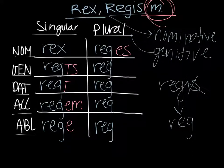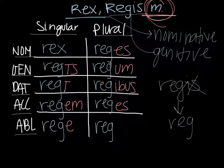For genitive plural it's um. For dative plural it's ibus. For accusative plural it's es. And for ablative plural it's ibus.